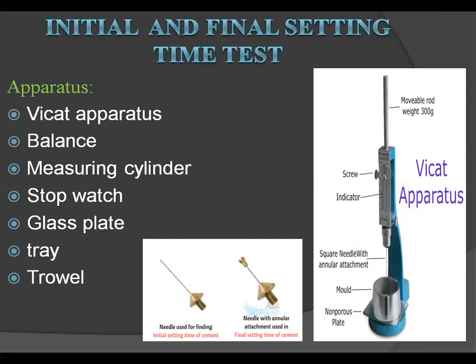The required apparatus includes the Vicat apparatus, which can be seen in the pictures. We also need a weighing balance machine, measuring cylinder, stopwatch, glass plates, tray, and trowel. There are two different needles: the first needle is used for initial setting time, and the second is a needle with an annular attachment used for final setting time.